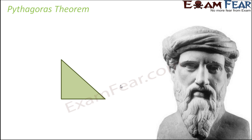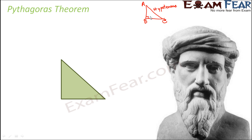So what this theorem states is basically something like this. Let us first understand the various terminologies related to a right-angled triangle. So whenever you have any right-angled triangle, let's call this ABC — a right-angled triangle where you have one right angle of 90 degrees. The side which is opposite to this right angle, that is side AC, is called the hypotenuse. The base is this side, and the other side is called the perpendicular. So perpendicular, hypotenuse, and base are the three sides of the right-angled triangle.